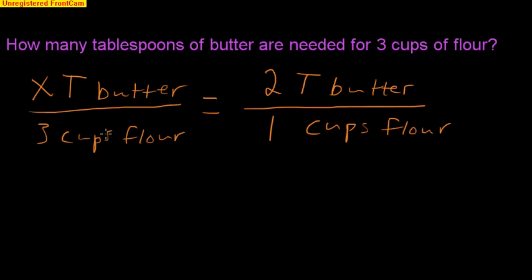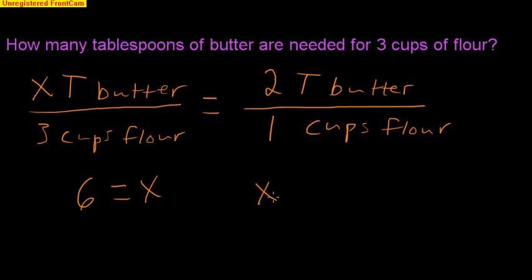Now once we've set up the proportion, the only thing left to do is cross-multiply and divide. 3 times 2 gives me 6. X times 1 gives me x. So 6 equals x, or x equals 6 tablespoons of butter. Let's look at our units — the unit on x is tablespoons of butter, so x equals 6 tablespoons of butter.